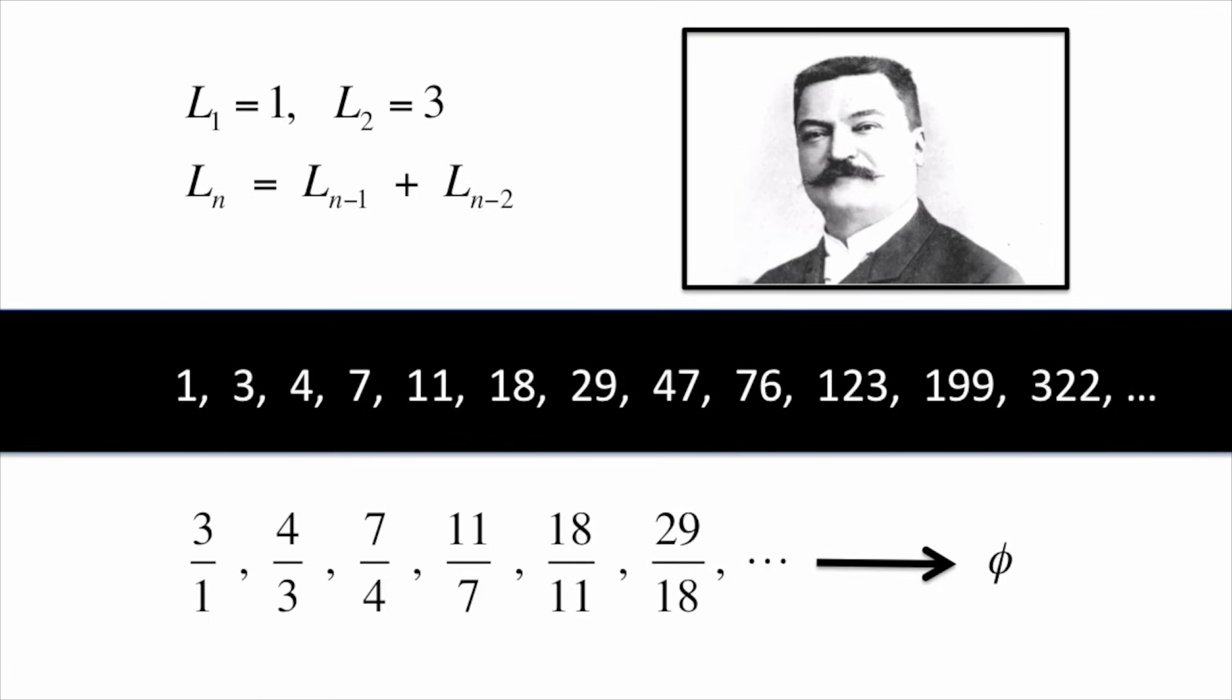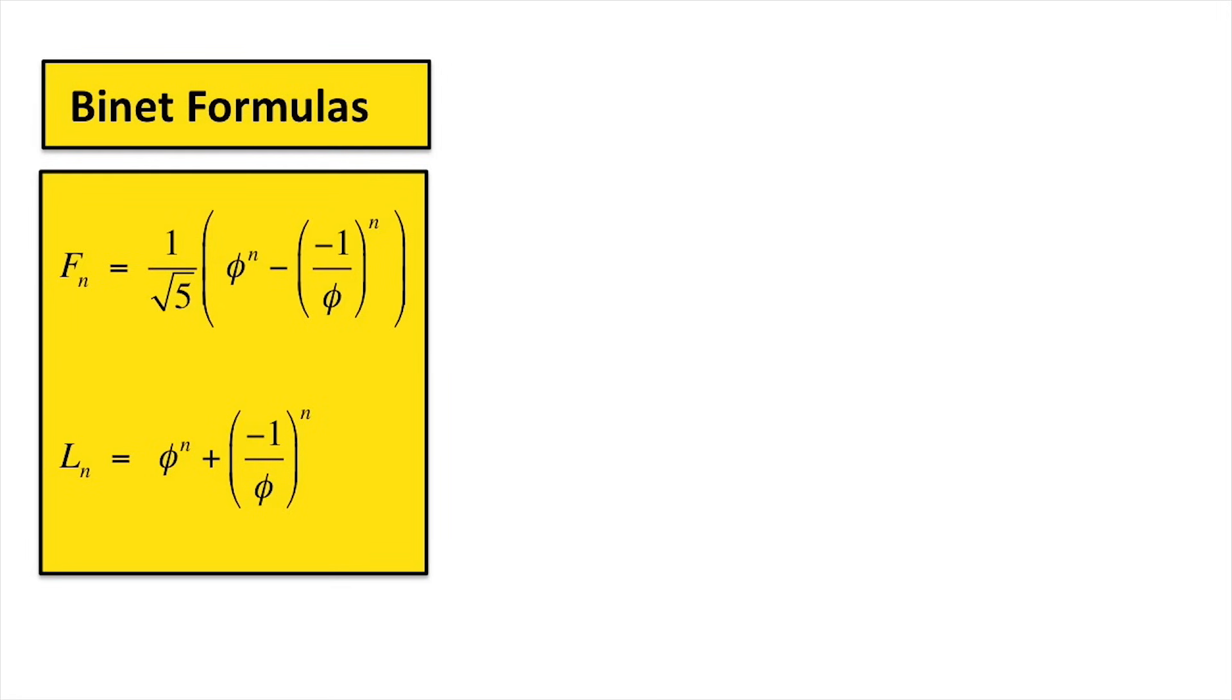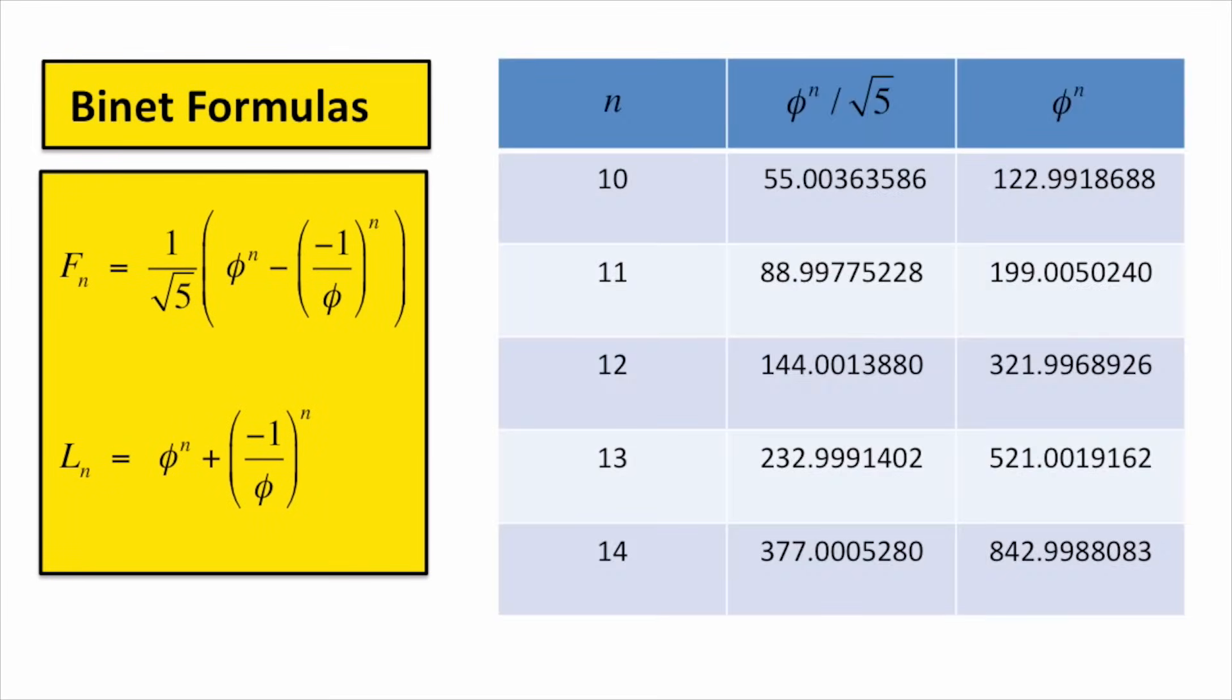But the plot thickens. Both the Fibonacci numbers and the Lucas numbers can be written in terms of powers of Phi. These are called Binet formulas. These formulas imply that powers of Phi, with or without dividing by the square root of 5, are increasingly close to integers.